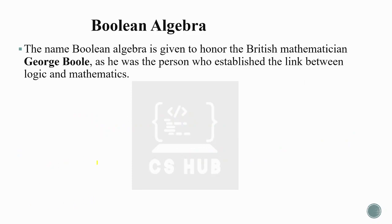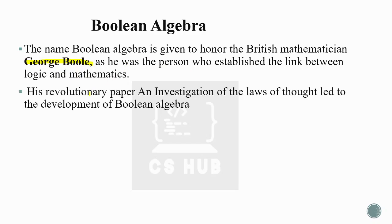The name Boolean algebra is given to honor the British mathematician George Boole, as he was the person who established the link between logic and mathematics. He published an investigation of the laws of thought, and this revolutionary paper led to the development of Boolean algebra.